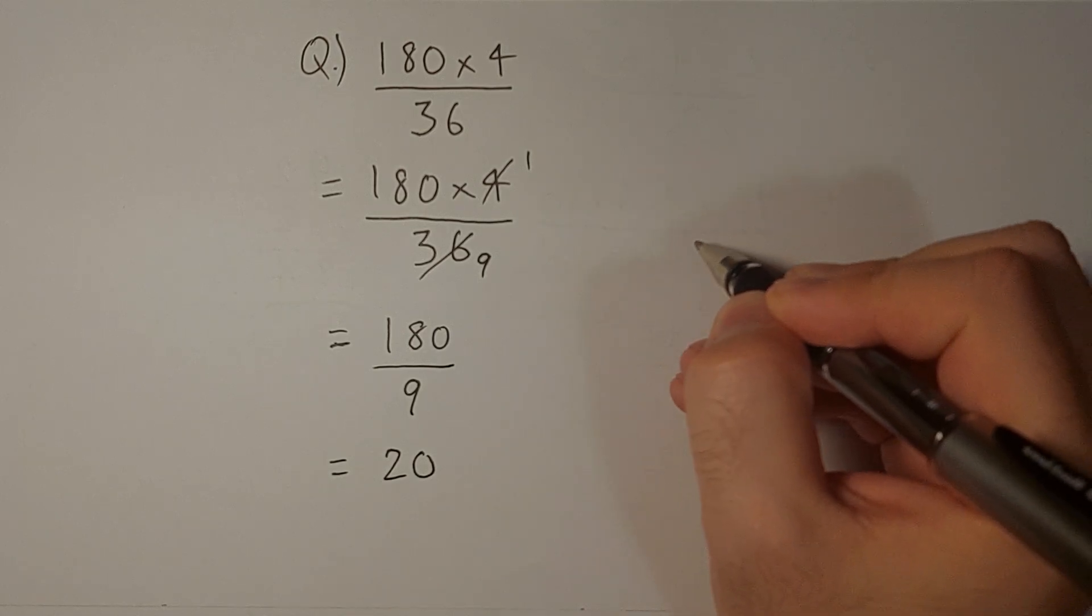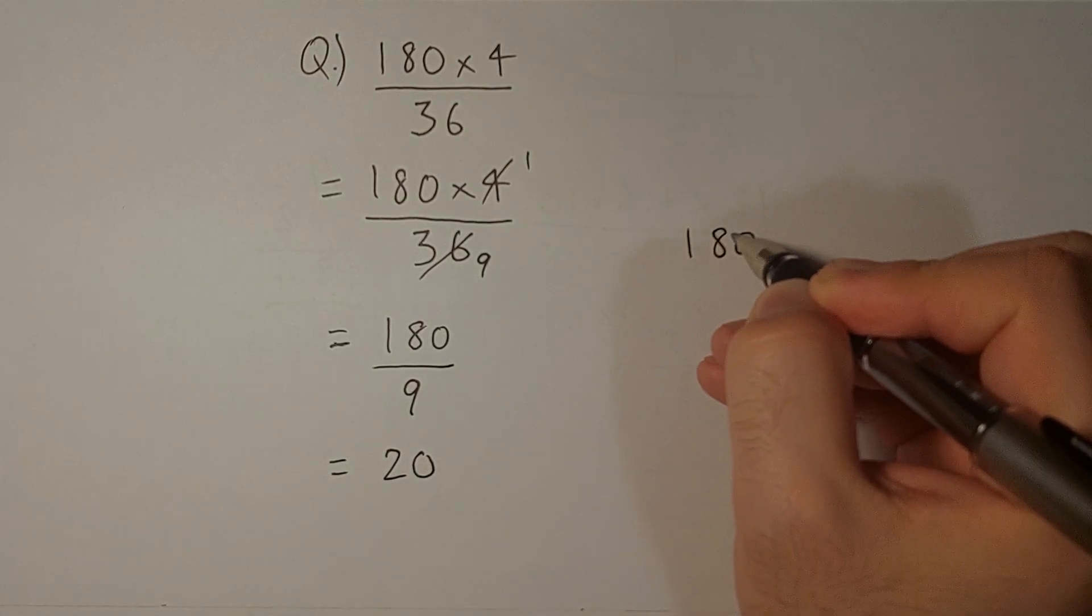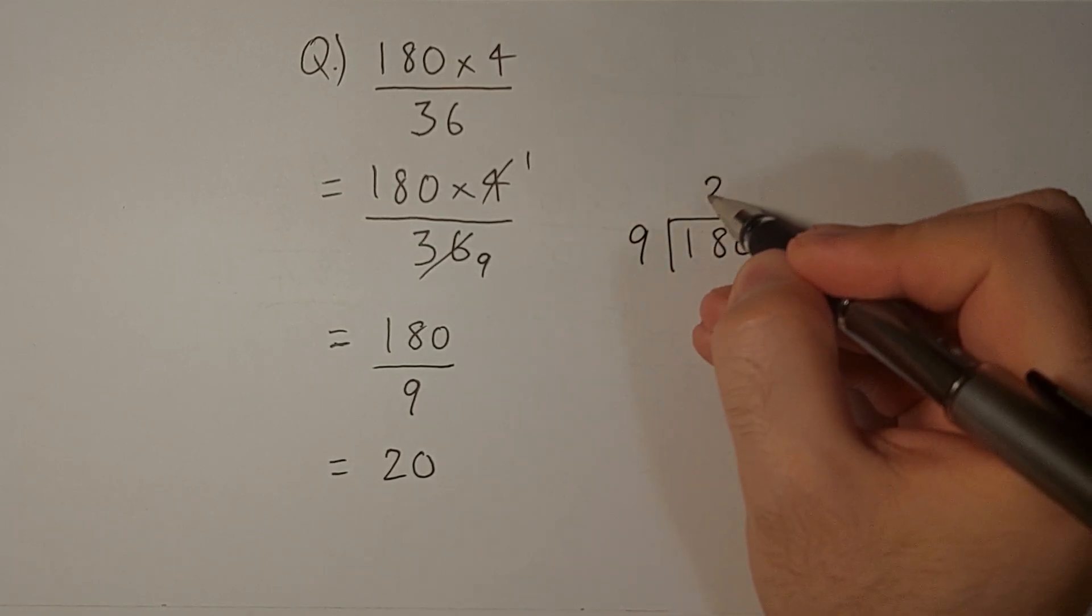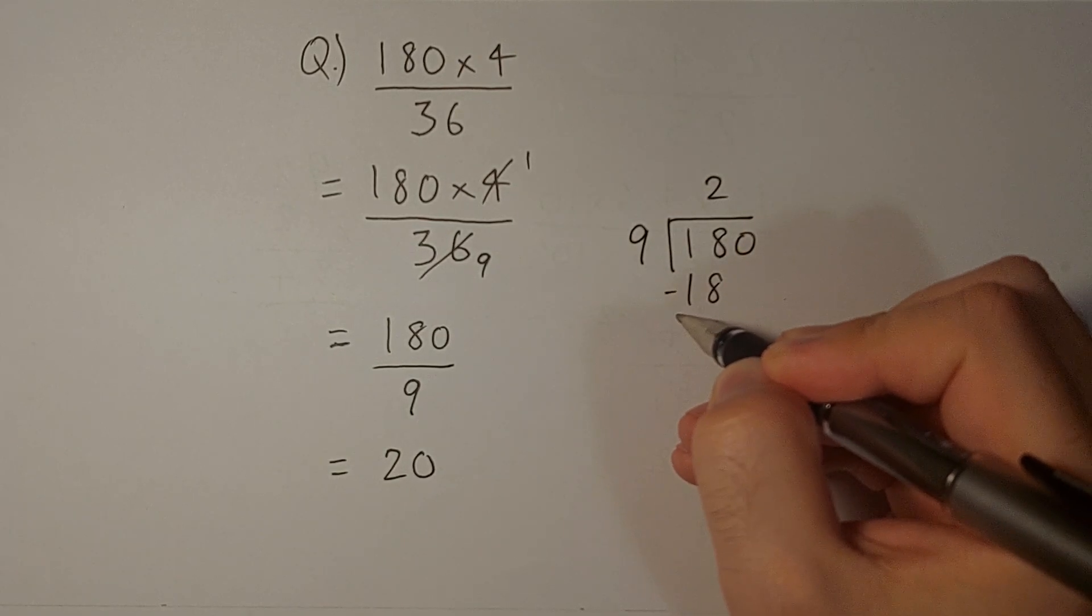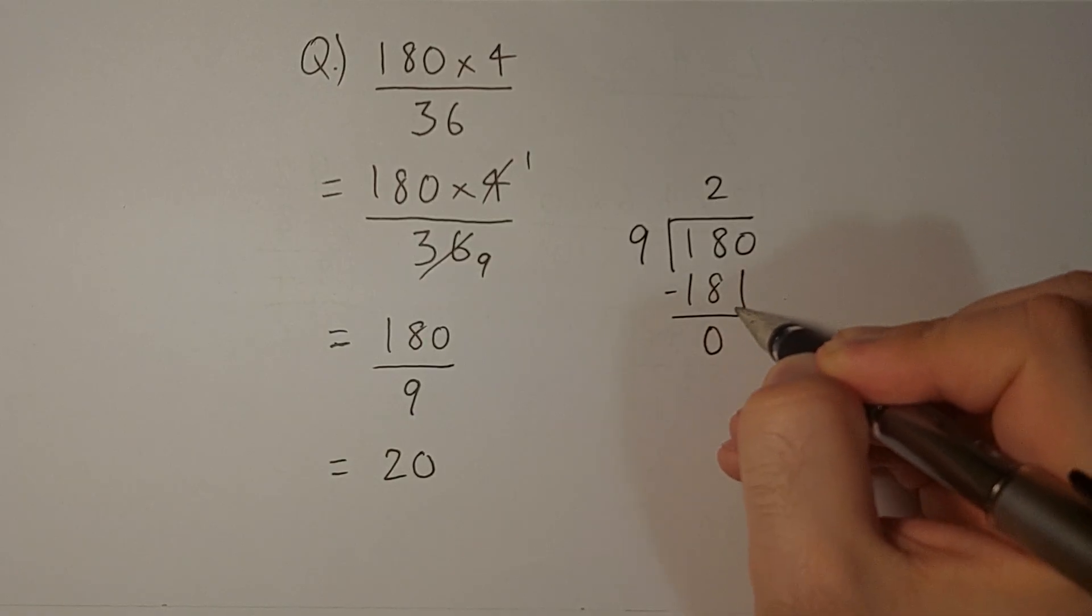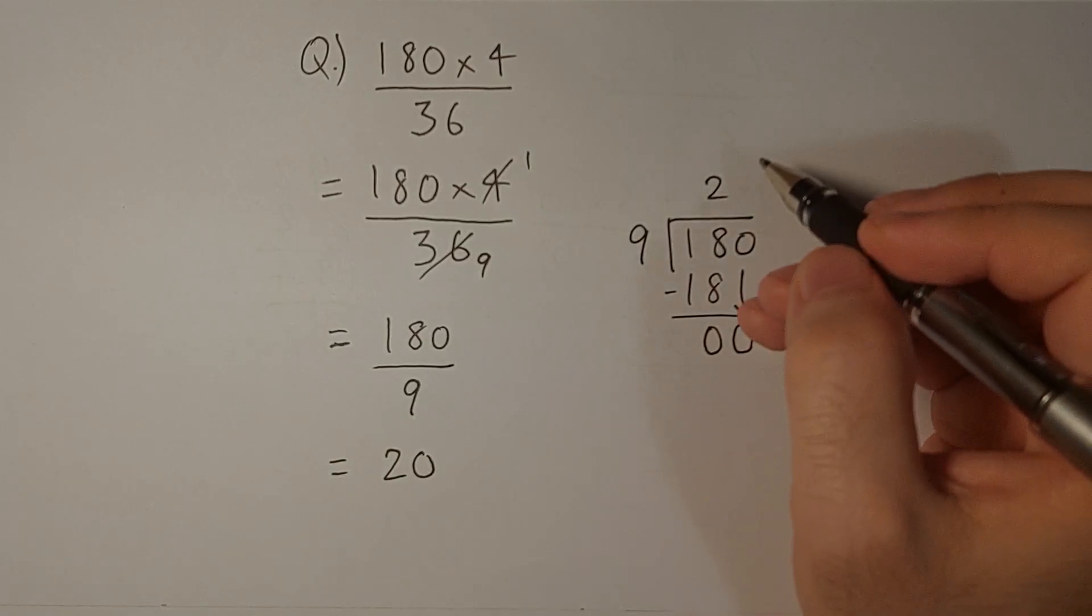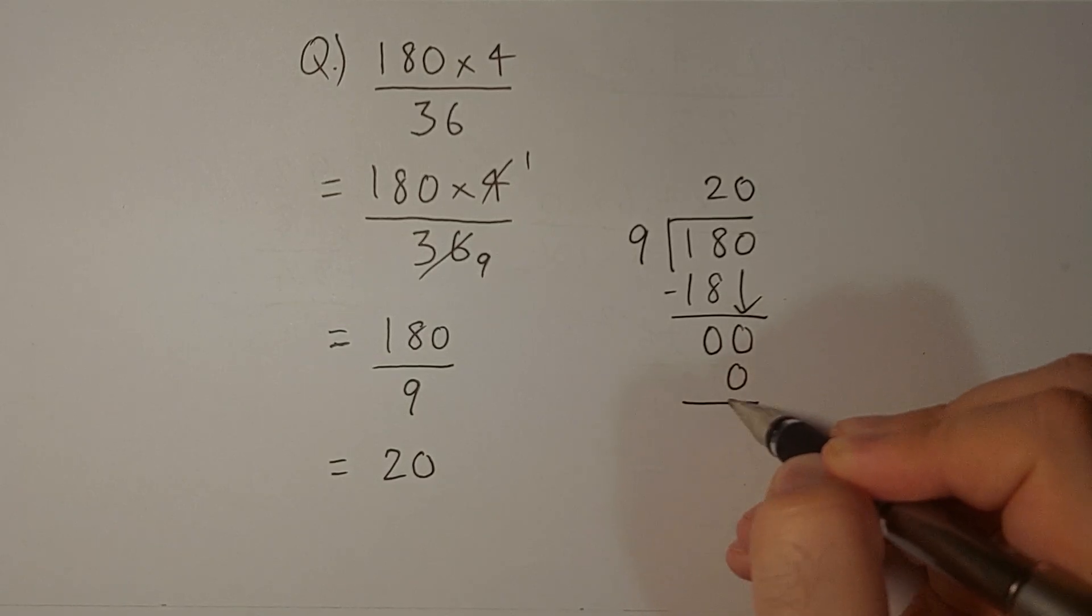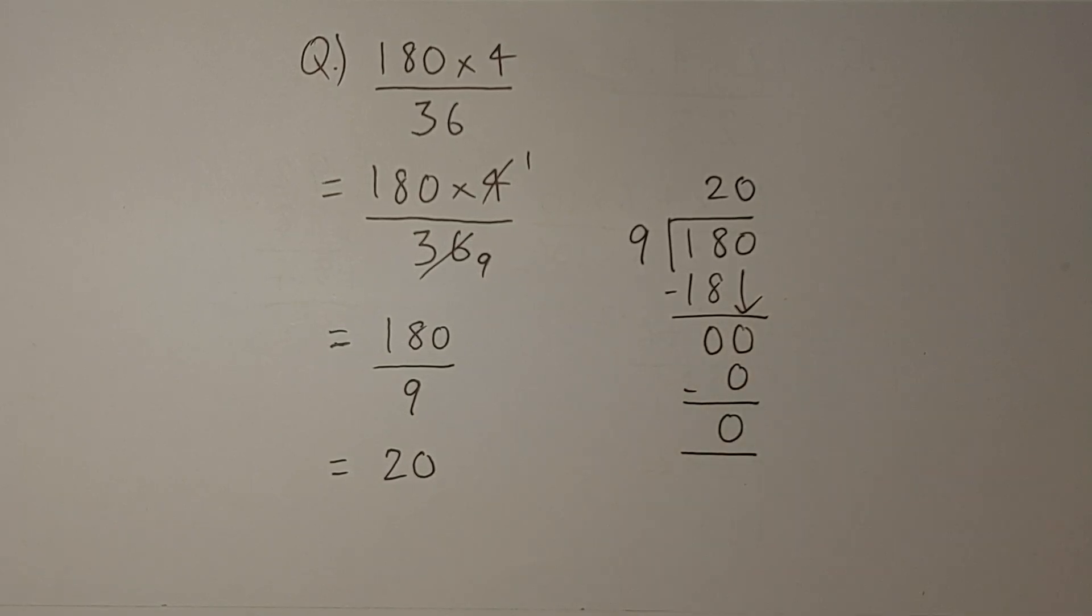And if you like you can also divide it like this: 9 times 2 is 18. This gives us 0. We bring the 0 down and when we multiply 9 by 0 again we get 0. So the remainder is 0.